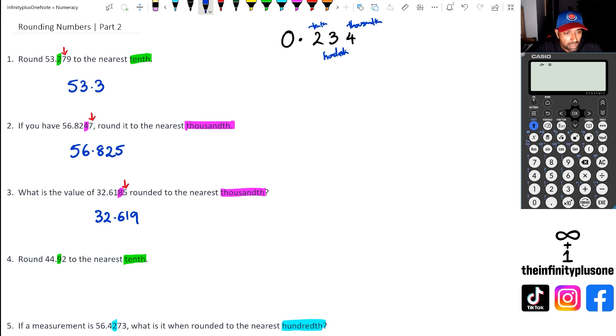Looking at question four, we've got 44.92. If you look at the number right after the nine, it is two, which is below five. Because it's below five, we're not going to round it up. Instead, we just write this as 44.9.